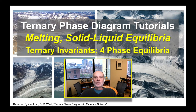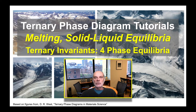In our next tutorial, we're going to focus on four-phase equilibria — three solids and a liquid. When we have those four phases coexisting, it's called an invariant reaction because there are no degrees of freedom. We're going to look at how to represent those four-phase equilibria and how to reliably assign the correct equilibrium assemblage to those invariant reactions.